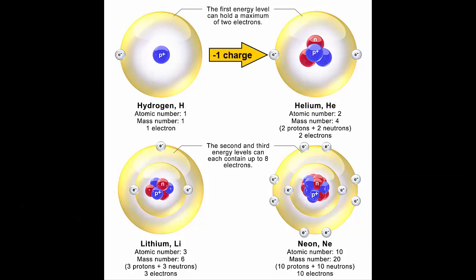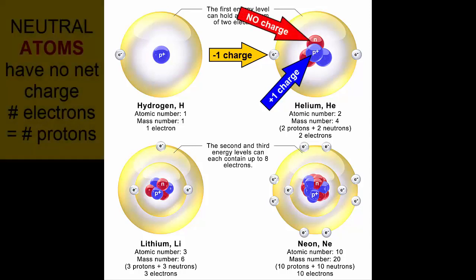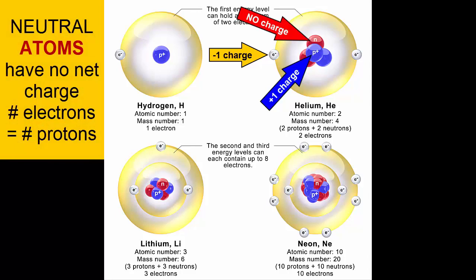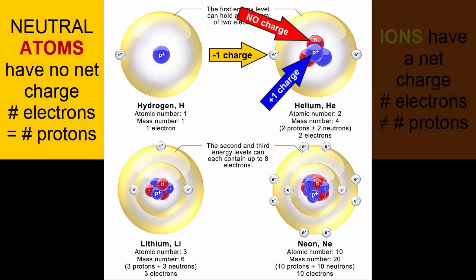Remember, electrons have a negative one charge, and protons a positive one charge. Neutrons have no charge. As long as the number of electrons and protons in an atom or molecule are equal, that atom or molecule has no net charge. If it did, it would be called an ion.